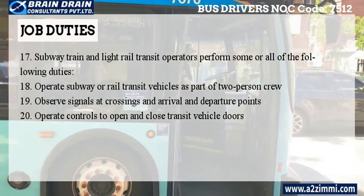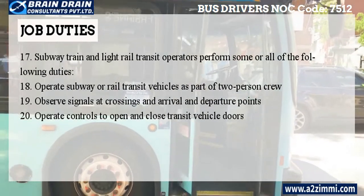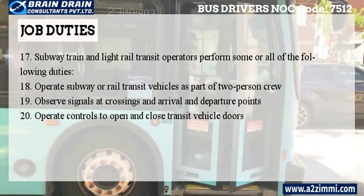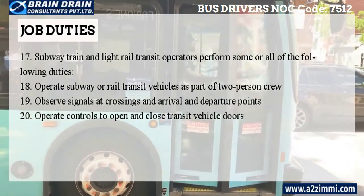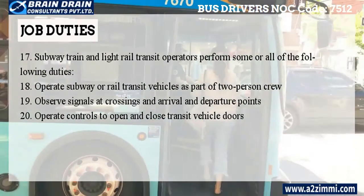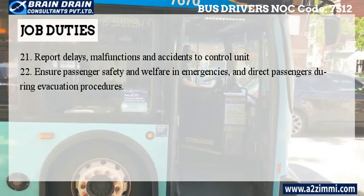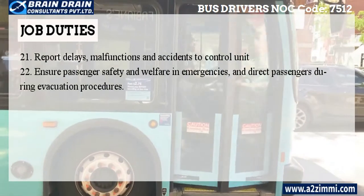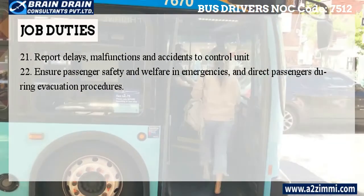Subway train and light rail transit operators perform some or all of the following duties: operating subway or rail transit vehicles as part of a two-person crew; observing signals at crossings and arrival and departure points; operating controls to open and close transit vehicle doors; reporting delays, malfunctions, and accidents to the control unit; and ensuring passenger safety and welfare in emergencies, directing passengers during evacuation procedures.